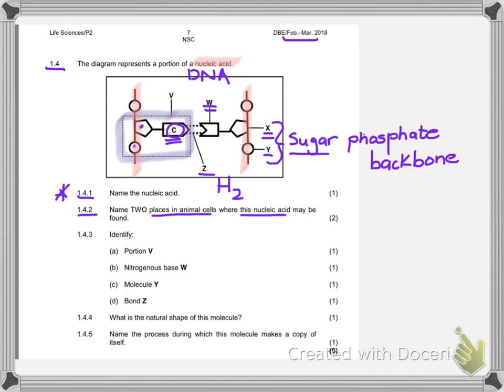Now the two places in animal cells where this nucleic acid is found is DNA and there are two places that we can find it in the nucleus and in mitochondrial DNA. Please don't confuse this with ribosomal RNA which is not obviously the same thing. 1.4.3 then asks us to identify a number of things. Portion V, nitrogenous base W, molecule Y and bond Z which we've already done so we've saved some time in trying to think that all through and getting it right.